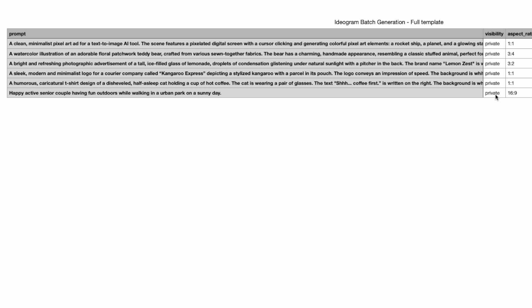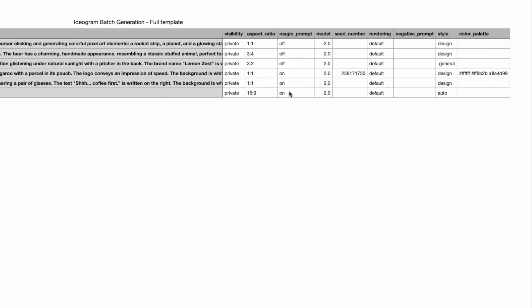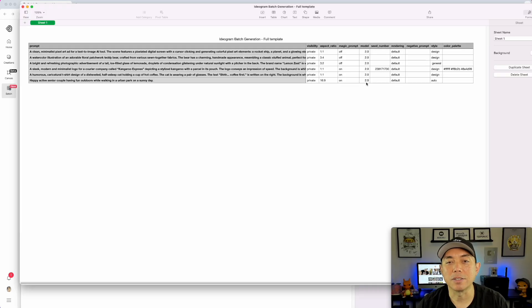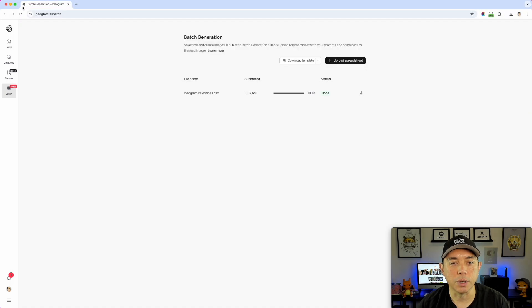The full template has a lot more things. You've got the prompt again, visibility, aspect ratio, and magic prompt — same as before — but with added options: what model you want to use, the seed number if you want consistent results, rendering type, negative prompt, style, and color palette. This is more detailed than you probably need — I just used the simple one.